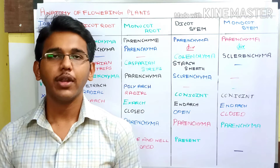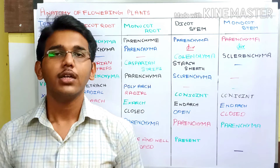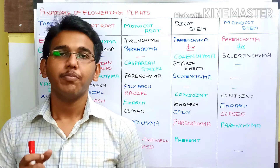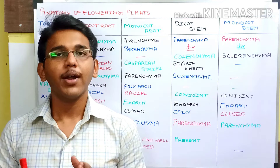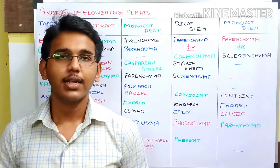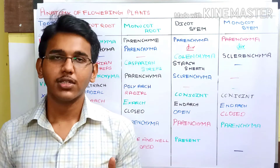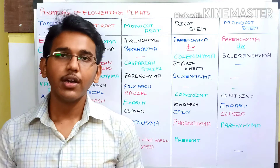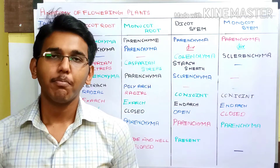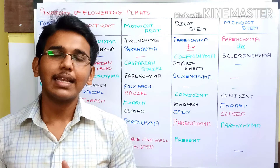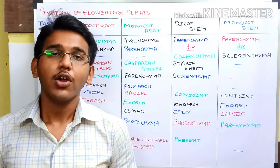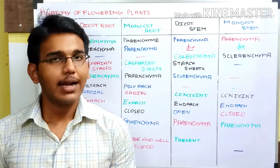Today in this video we are going to see the four important topics of the chapter anatomy of flowering plants. Generally people feel somewhat difficult to learn and remember these four topics: dicot root, dicot stem, monocot root, and monocot stem. Here we are with a new methodology — the methodology of differentiation — by which you can easily remember and learn all the types of tissues and characteristics of these four topics.